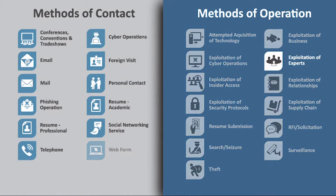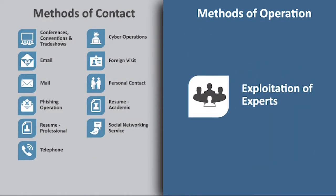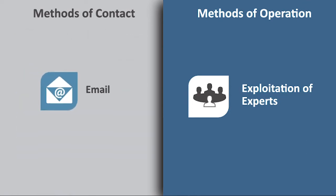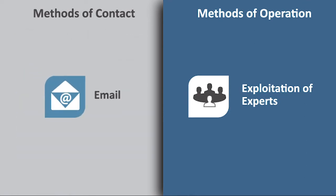In a third example, exploitation of experts is a method of operation used by an adversary, and an email request is a method of contact — involving an email to a company employee requesting them to review some work or give a consultation. Examples include a scientist or engineer receiving a seemingly innocent email requesting a peer review, an administrative assistant or HR employee asked for personnel information on a project, or a budget analyst asked to share examples of their budgeting process concerning a sensitive program.